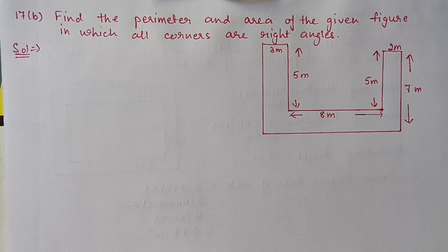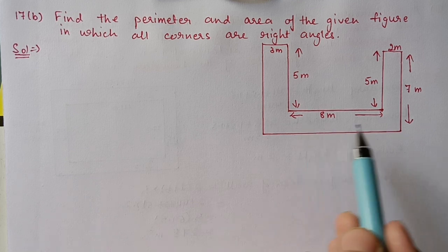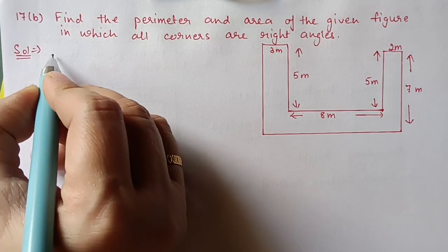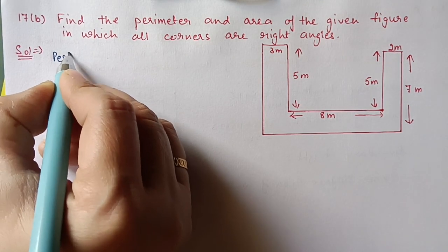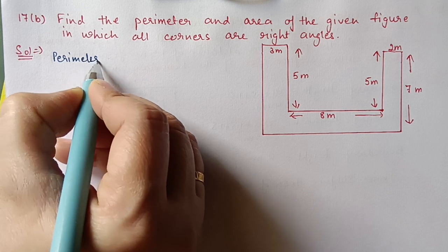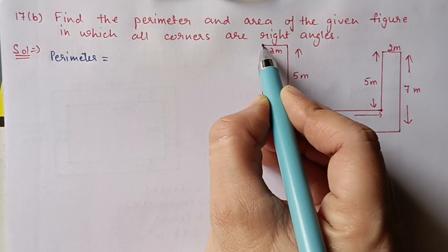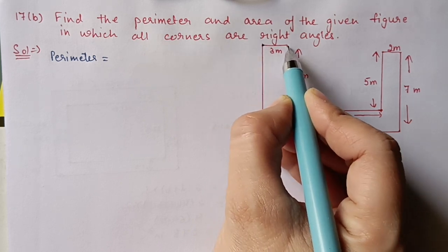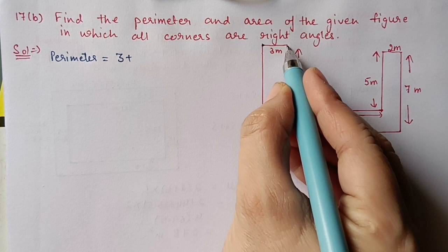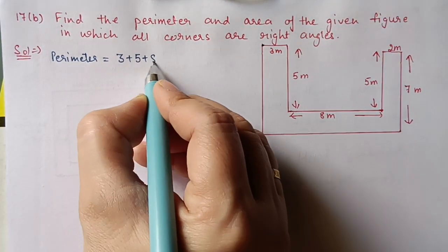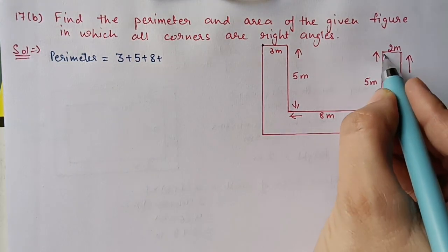Second part: find the perimeter and area of the given figure in which all corners are right angles. A U-shape figure is given. We have to find out the perimeter and area. First we will calculate the perimeter by measuring the boundary. We catch one corner and start from there.